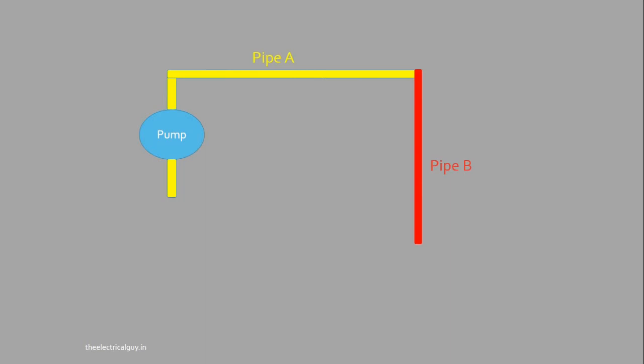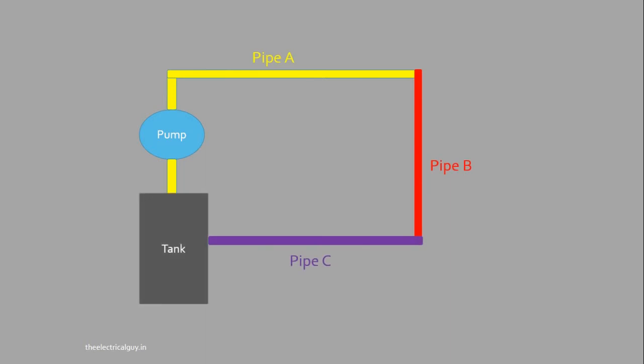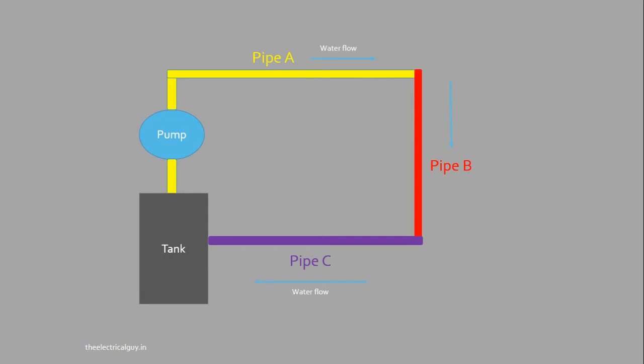To understand these connections, consider an example of a water pump and pipes. Let's say you have three pipes and a water pump, and you connect those three pipes as shown in the figure. Water flows from pipe A, B, and C into the tank. There is only one flow of water throughout all the pipes and there is an equal amount of water in all three pipes — this is an example of series connection.